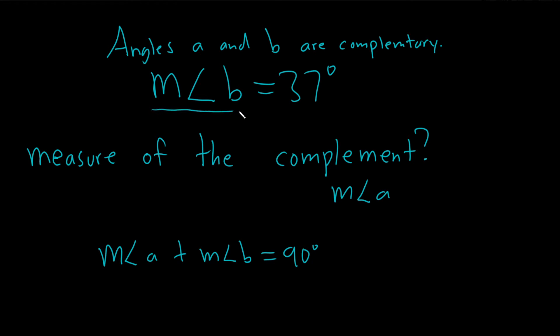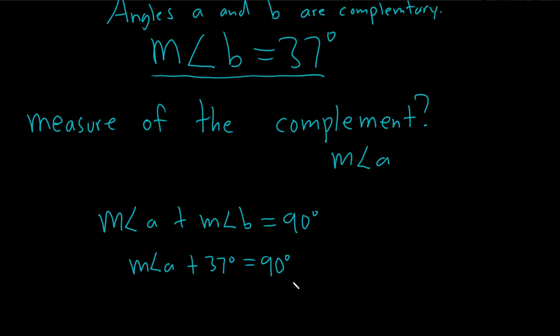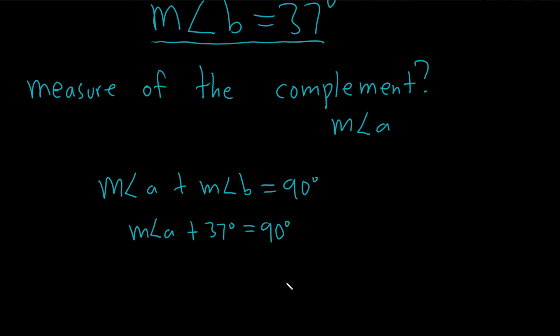And so we know that this one is 37, so we have the measure of angle A plus 37 degrees equals 90 degrees. So we just have to find the measure of angle A, so that's the measure of the complement.